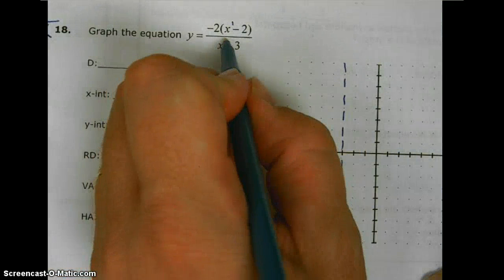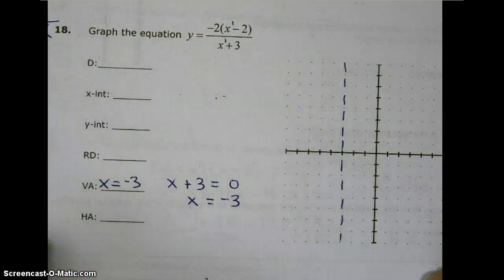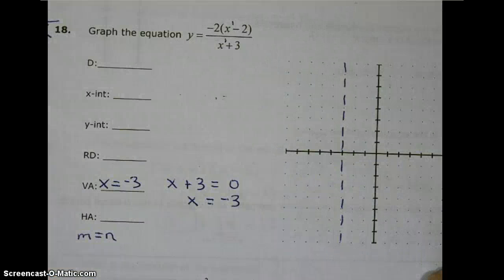Since m equals n, since the degrees equal, then y equals a over b.